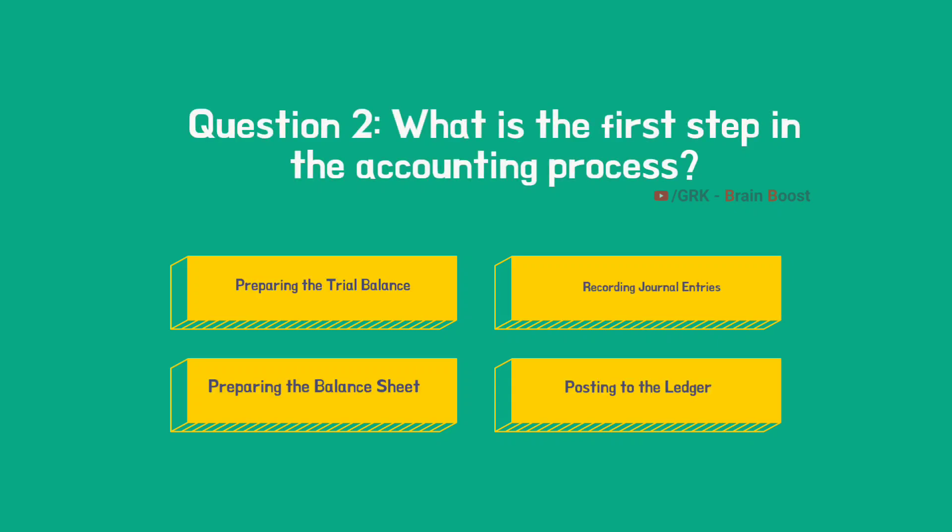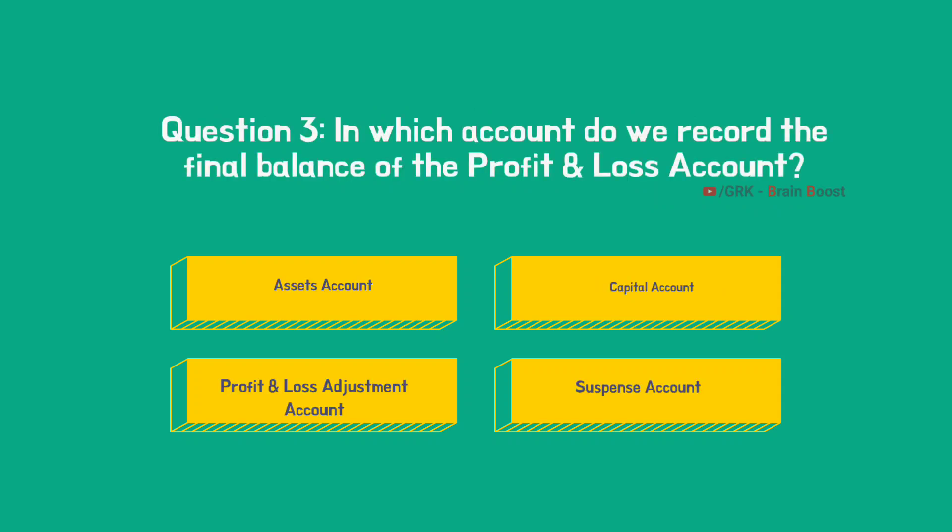Second question: what is the primary step in the accounting process? Looking at the steps we discussed, the primary step will be the recording of journal entries. Then we prepare the ledger accounts, from there the trial balance, then the trading and profit and loss account, and the final step is the balance sheet. So the correct option is B — recording of journal entries.